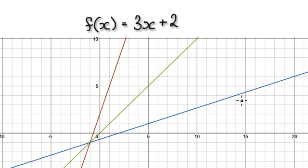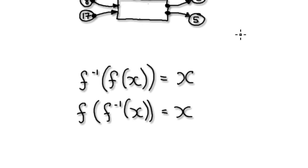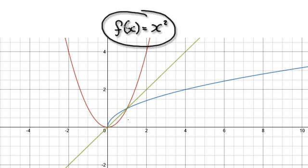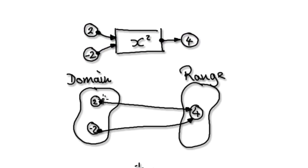So no matter what function you have, the inverse function will be the reflection along the y equals x line. Now take a look at f of x equals x squared. If you get a graph plotter and plot it, it will look like this. Now the thing about this function is that if you put in the number 2, it spits out 4, but if you put in negative 2, it will also spit out 4. So here you've got a many-to-one relationship.